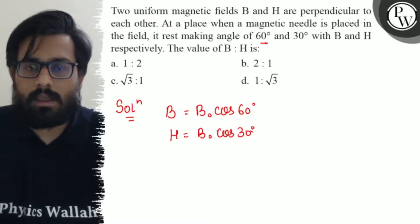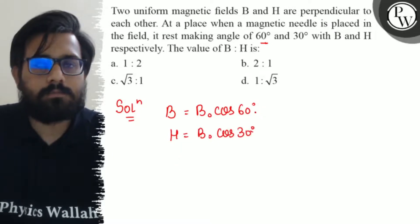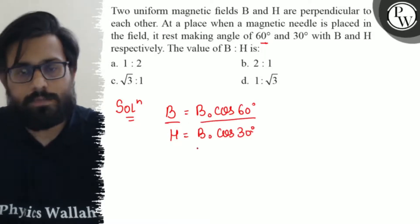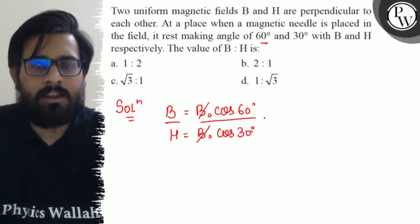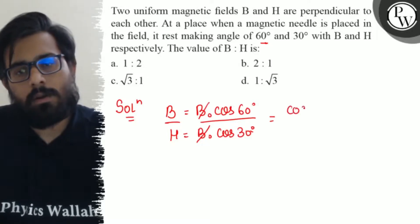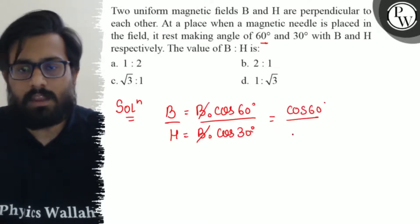Both B and H are perpendicular. Basically, here you can see if you divide these two, B₀ and B₀ get cancelled out, which are the magnetic fields. Cos 60 ki value upon cos 30 ki value, agar yame pata hai, then we can solve this question very easily.